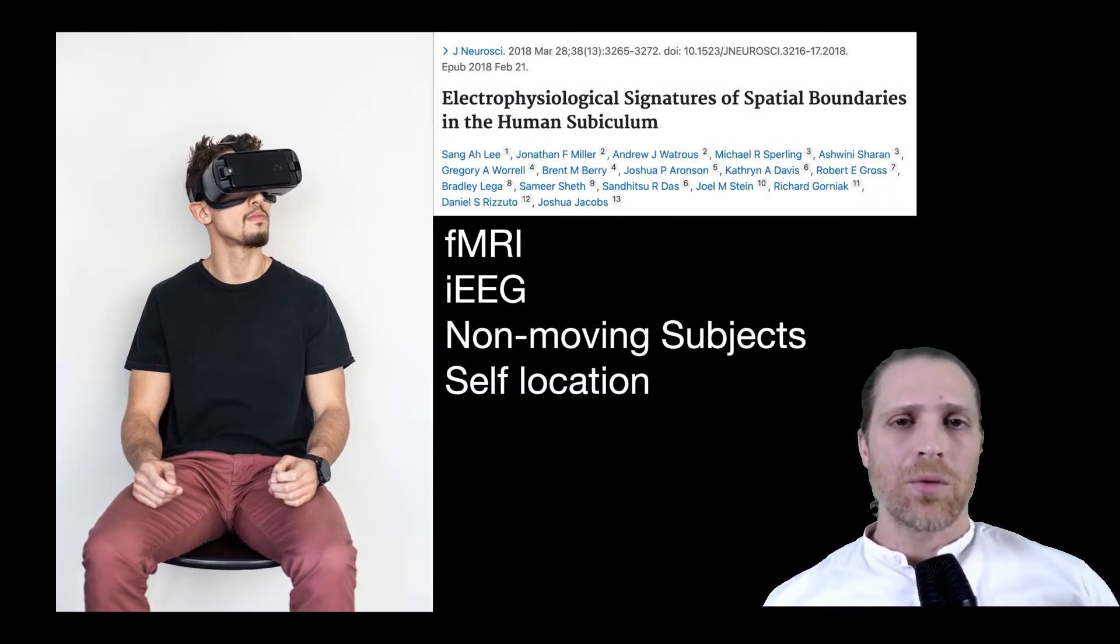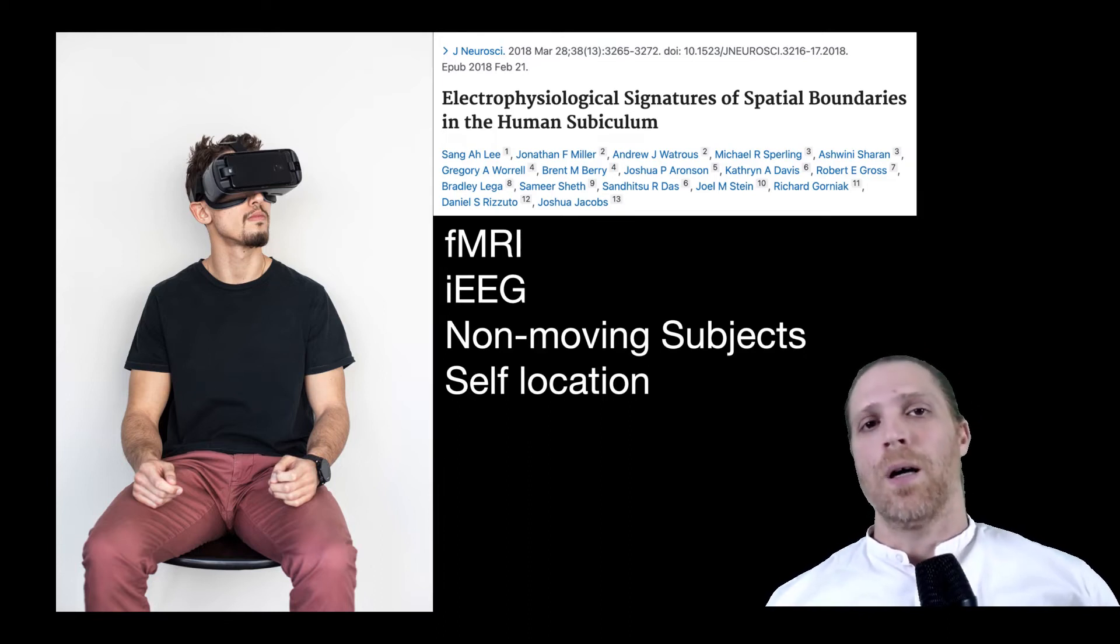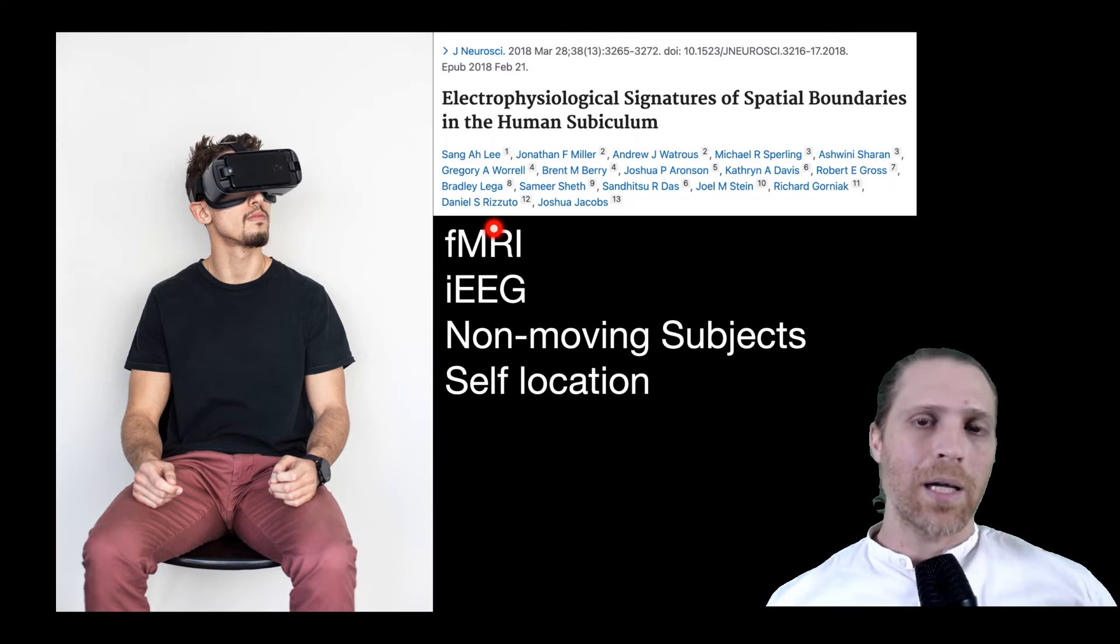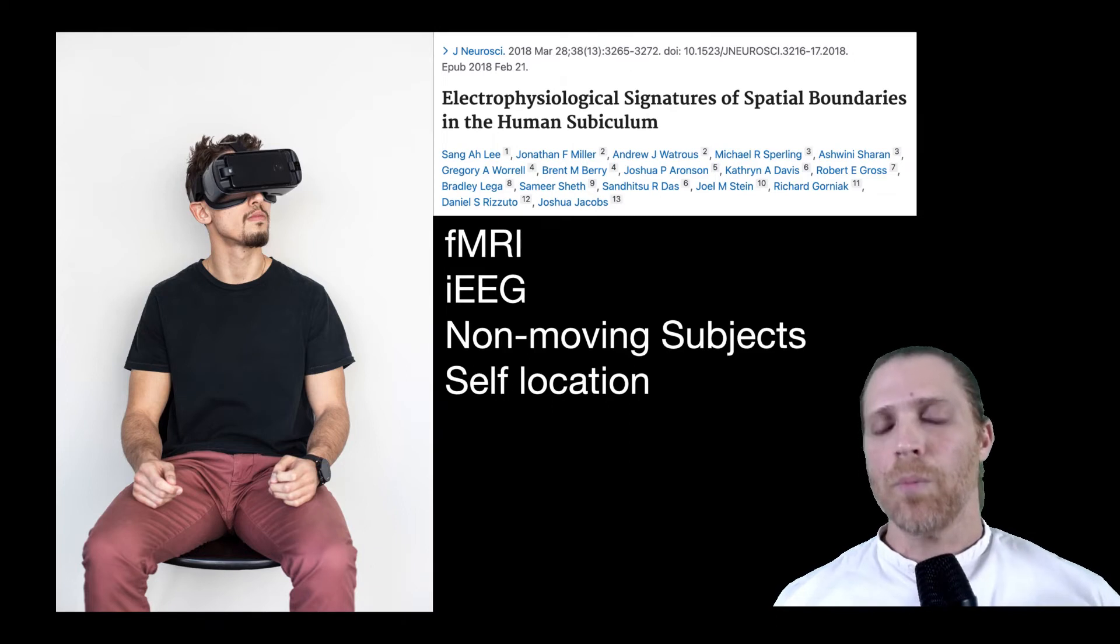A relatively recent study was able to show in humans that the medial temporal lobe encodes theta rhythms when a person navigates in space and is located next to a border. In this study, the authors utilized functional MRI, which showed them that there is a particular metabolic activity in the medial temporal lobe of individuals that were navigating in space near borders of the environment.